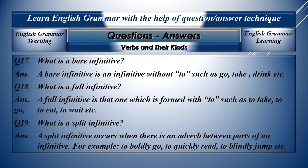Question number seventeen: What is a bare infinitive? A bare infinitive is an infinitive without 'to', such as do, take, drink, etc. Question eighteen: What is a full infinitive? A full infinitive is that one which is formed with the help of 'to', such as to take, to go, to drink, to eat, to wait, etc. Question nineteen: What is a split infinitive? A split infinitive occurs when there is an adverb between parts of an infinitive. For example, to go becomes to boldly go, to secretly go, to quickly read, to blindly jump, etc.